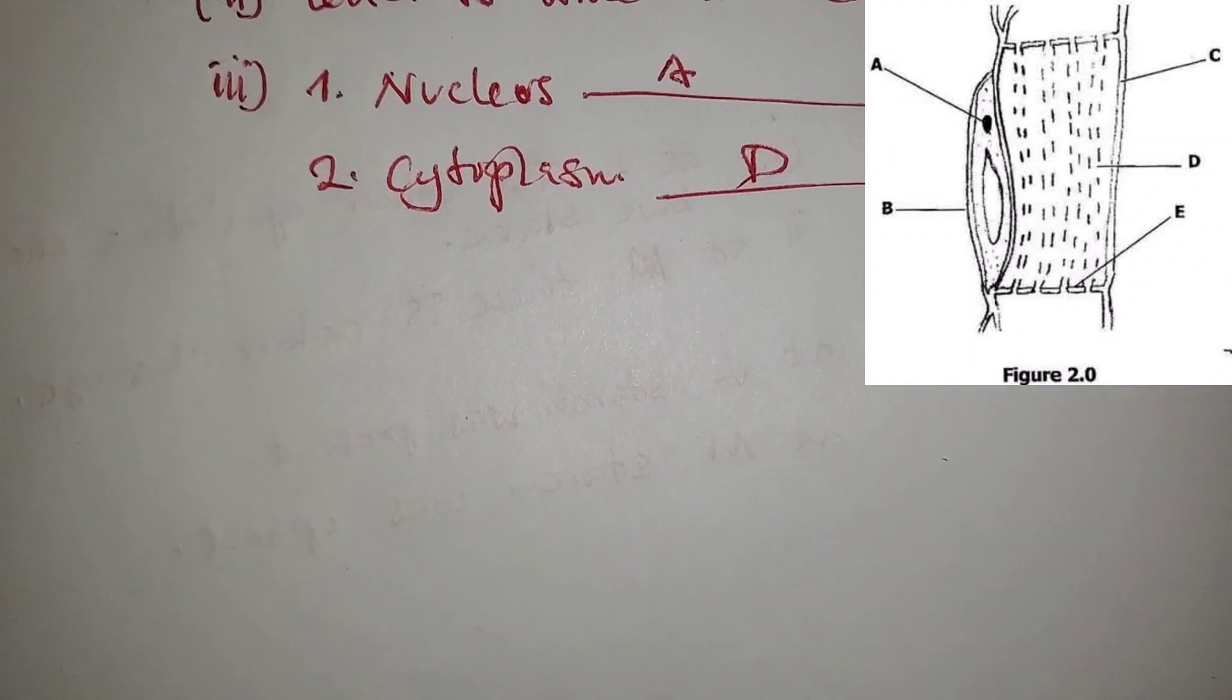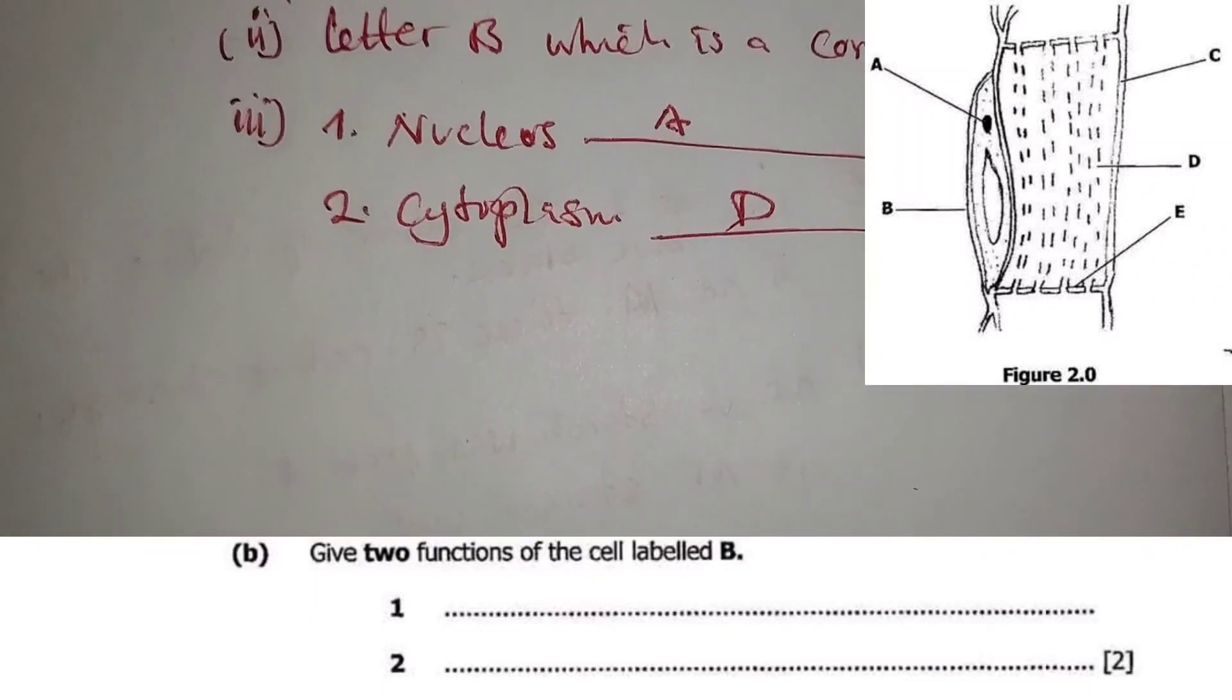Number two: cytoplasm. Cytoplasm is D. D is cytoplasm. Then let's go to question B.